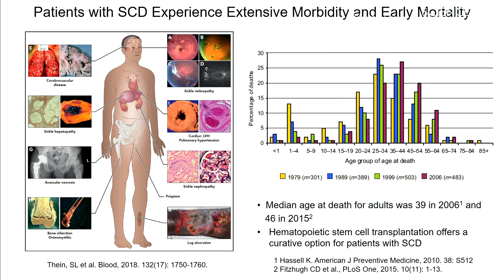On the y-axis of this figure is the percentage of deaths, and the x-axis is the age at time of death. The yellow bar shows the mortality rate in the 1970s and the purple bar is the mortality rate in 2006. Survival has improved for children due to newborn screening, penicillin prophylaxis, and pneumococcal vaccination. But over the past four decades, there hasn't been an improvement in survival for adults with sickle cell disease. The median age of death for adults in 2006 was reported to be 39, and at the NIH we reported in 2015 that it was 46. So adults continue to die early.